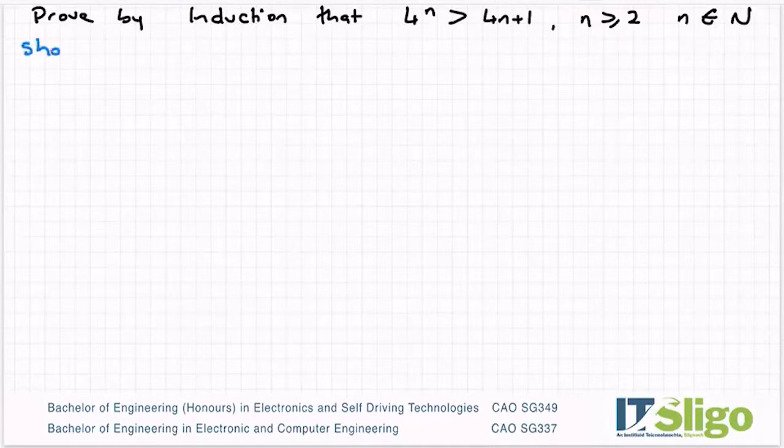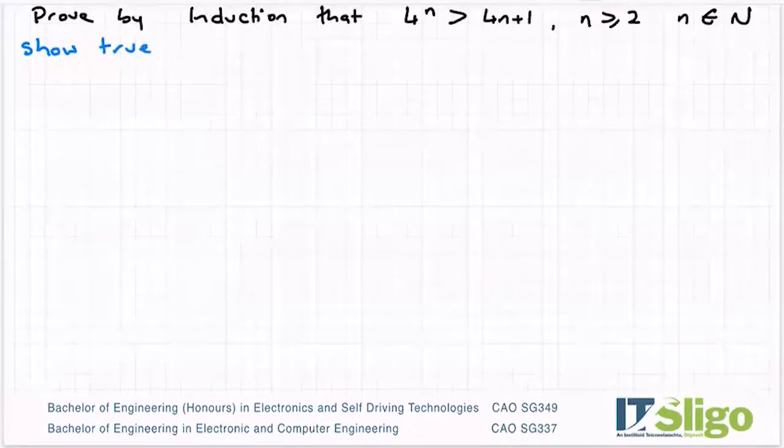Well, you can't show true for n equals 1 in this case because it's not starting at 1. The smallest number you can show true for is n equals 2. So our starting number in this one is 2.